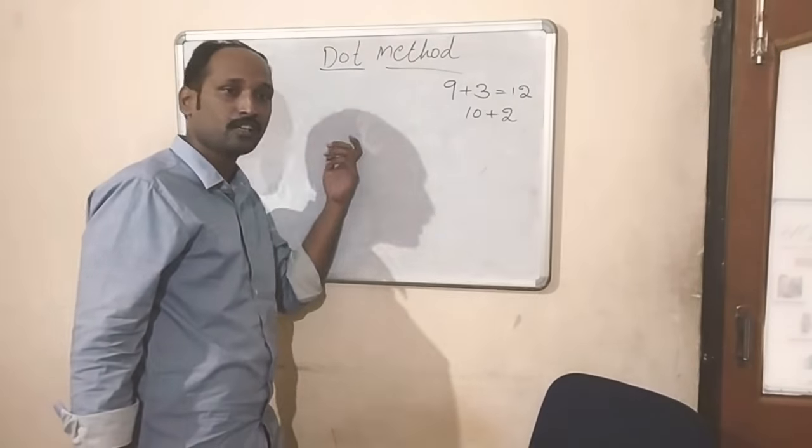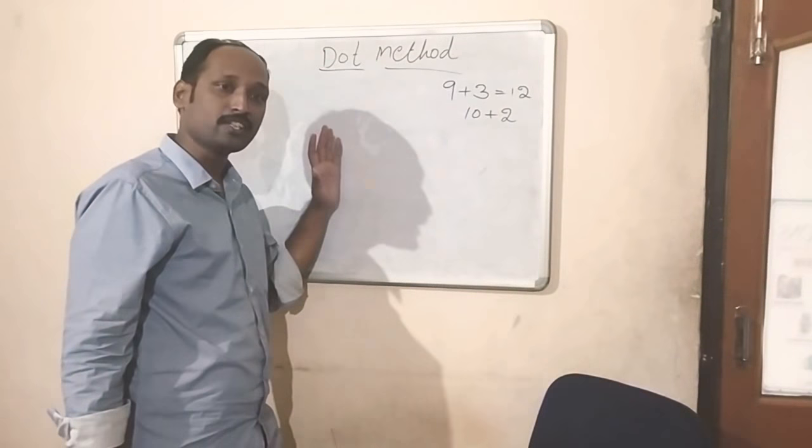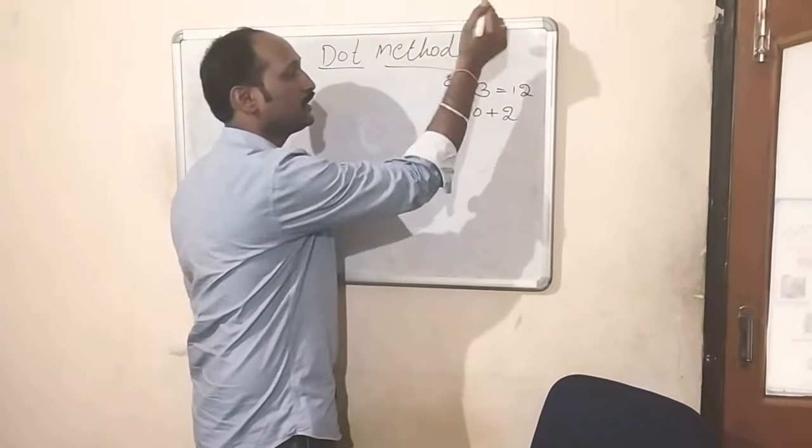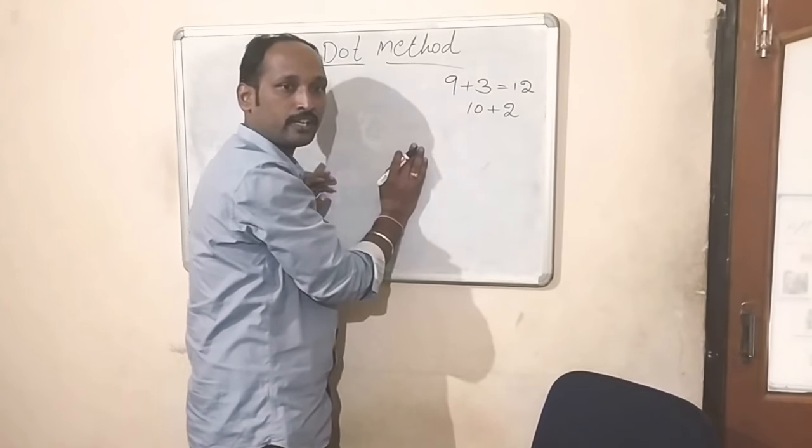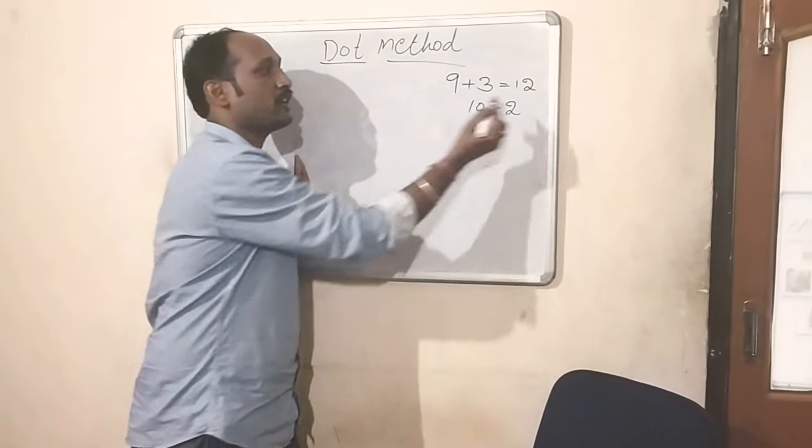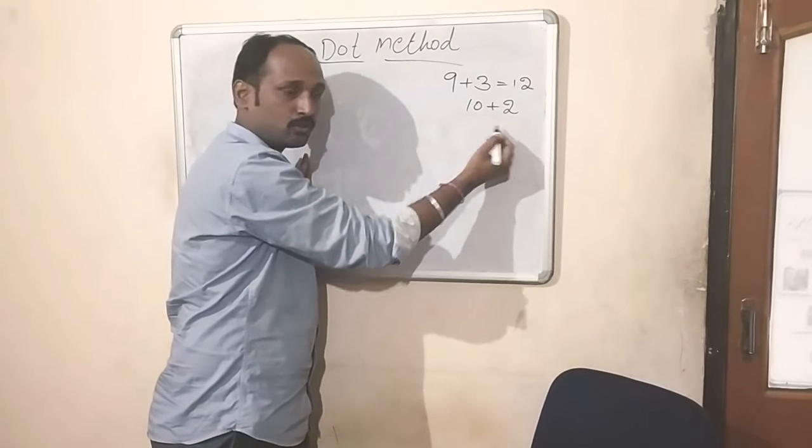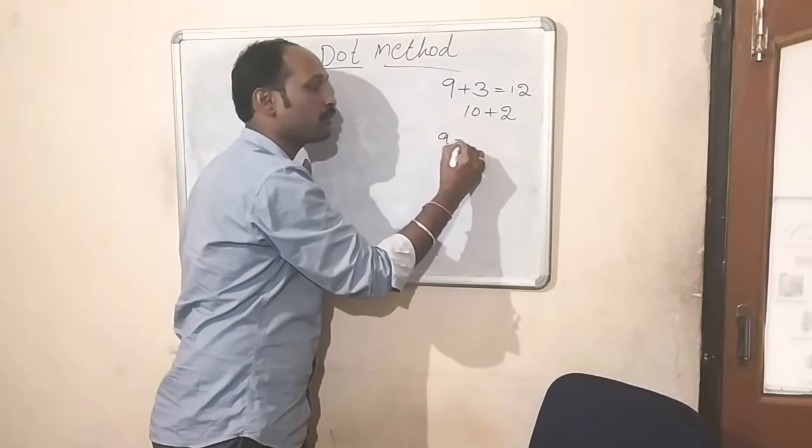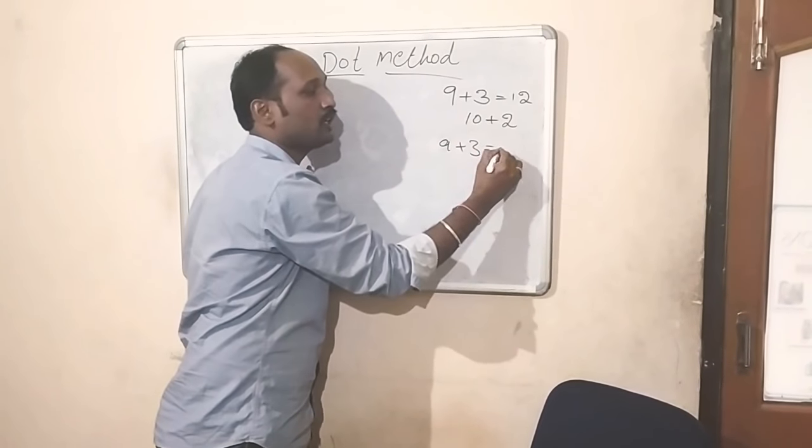This we are doing in dot method. The dot method is also list addition. In dot method, we are dropping 10. Dropping means drop the 10, carry the next number. That's why 12 can be written as 10 plus 2. So 9 plus 3, in other words, we are saying dot 2.